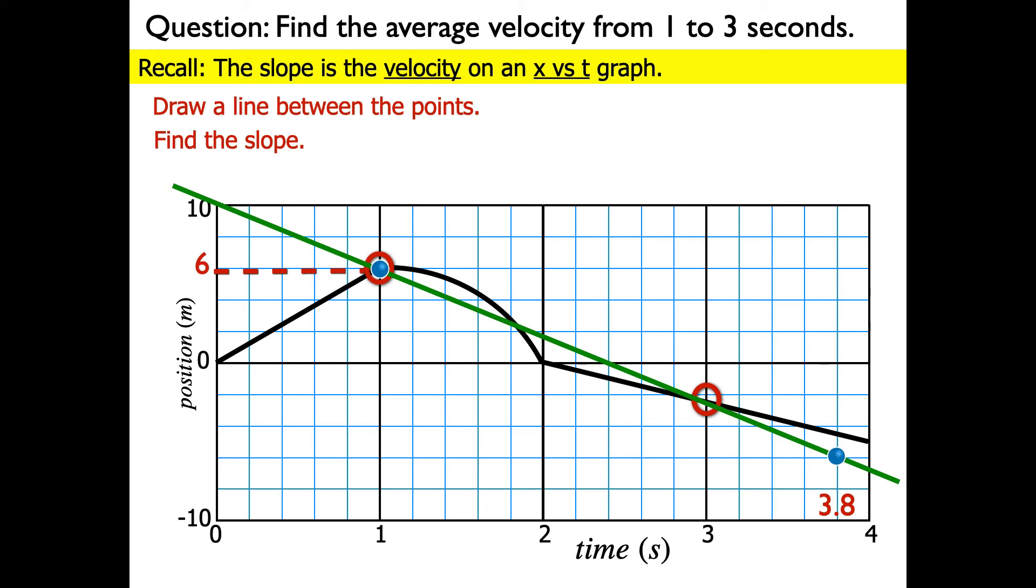So its position at 1 second is going to be at 6 meters. And the position at 3.8 seconds is going to be negative 6 meters. So that means that the rise is going to be negative 12 meters.